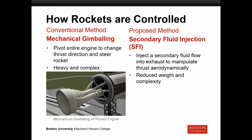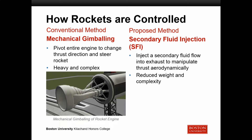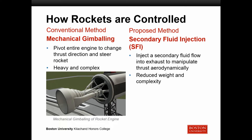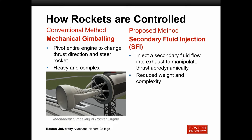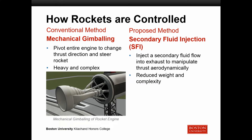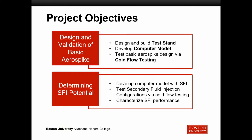So how are rockets controlled? The conventional method is mechanical gimbaling, where you pivot the entire engine to change thrust direction and steer the rocket. As you can imagine, this is heavy and complex — moving a big piece of machinery around in flight. Our proposed method is secondary fluid injection, or SFI, where we inject a secondary fluid flow into the exhaust to manipulate the thrust aerodynamically, which reduces weight and complexity.